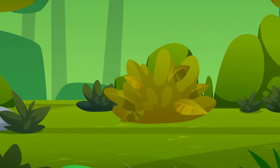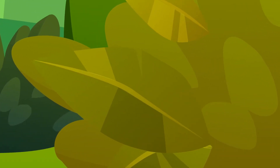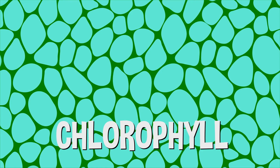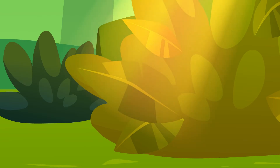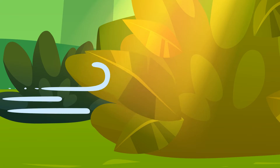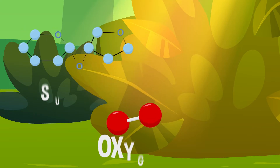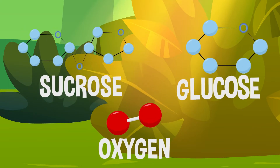Well, that has to do with a very special chemical inside plants called chlorophyll, which is what they use to make their food. The chlorophyll inside the leaves traps light from the sun. The plant then uses that stored up light energy to change water and chemicals in the air into sugars and oxygen.